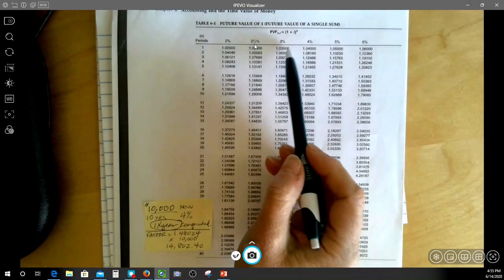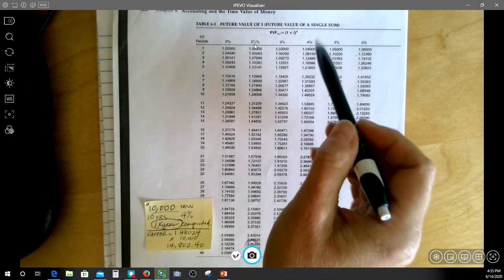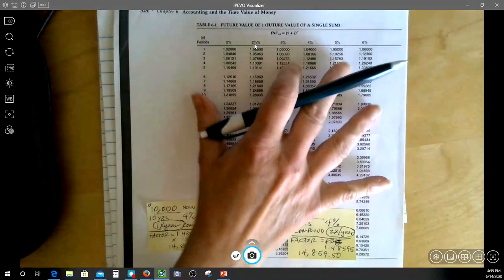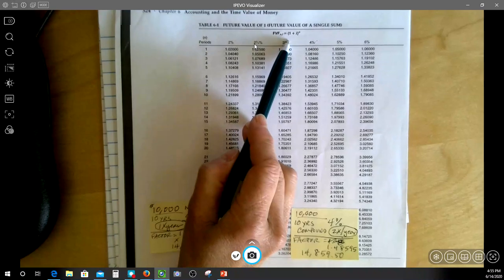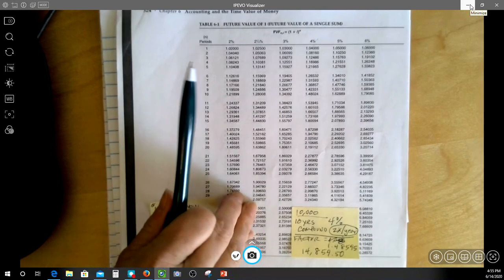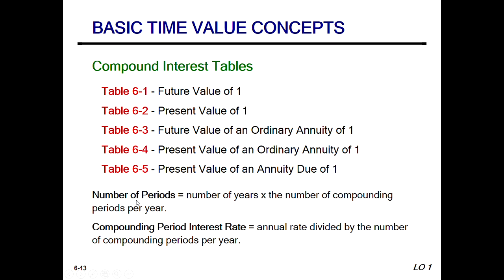If it were compounded on a monthly basis, we wouldn't be able to use this table and would have to use the formula instead. For any problems in your homework, you'll be able to use these tables. The number of periods is the number of years times the number of compounding periods per year. For example: once per year equals one period per year; twice per year equals two; quarterly equals four. If compounding is more frequent than annual, divide the interest rate by the number of compounding periods per year.